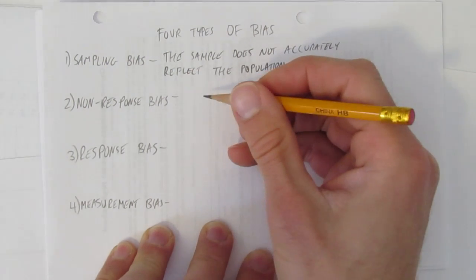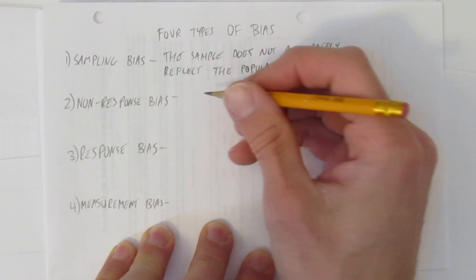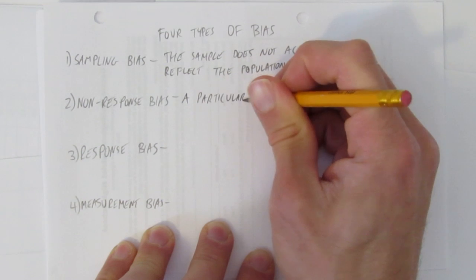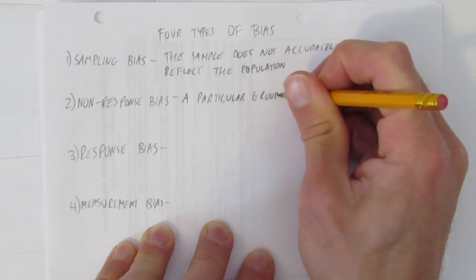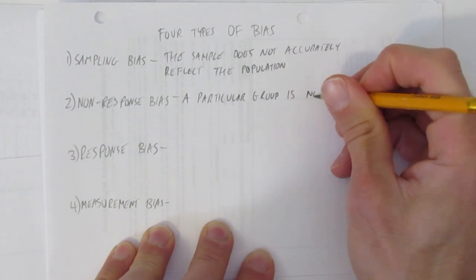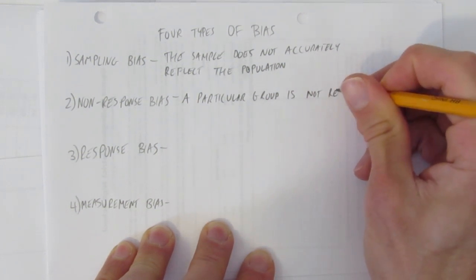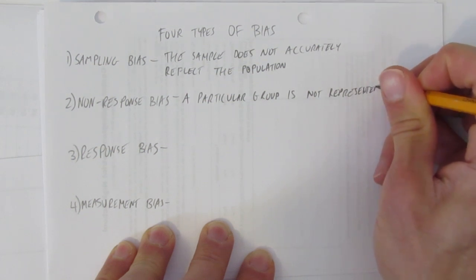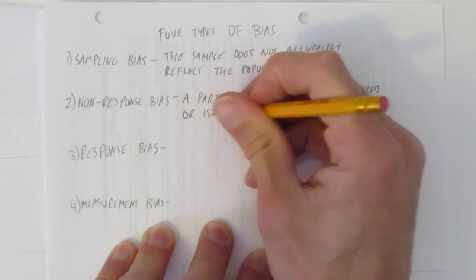Another type of bias is non-response bias. This is when a particular group is not represented or is underrepresented.